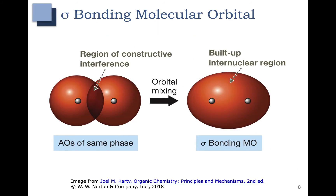The sigma bond consists of two molecular orbitals: a sigma bonding molecular orbital, which is shown here, and a sigma antibonding molecular orbital, which we'll talk about in a couple minutes. In the sigma bonding molecular orbital, the two atomic orbitals shown here are of the same phase. That means that you have constructive interference, and when they mix, you form a nice bonding molecular orbital with a good solid internuclear region.